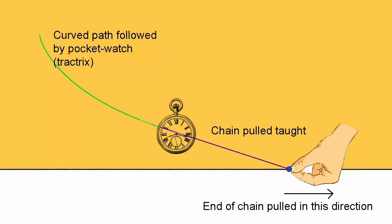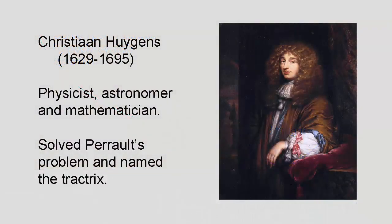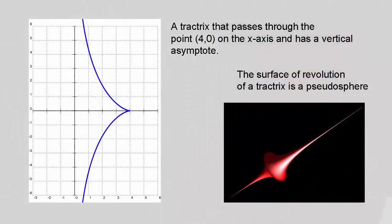The first known correct answer to Perrault's question came in a letter to a friend in 1693 by the Dutch physicist, astronomer, and mathematician Christiaan Huygens, and it was Huygens who also coined the name tractrix from the Latin tractus for something that is pulled along. The corresponding German name is Hund curve or Hound curve, which makes sense if you imagine the path a dog might follow on its leash as its master walks away.